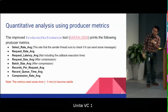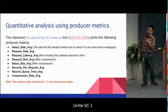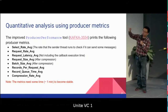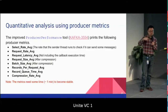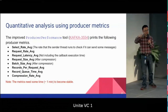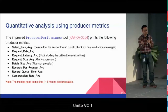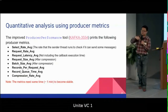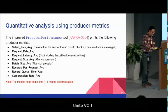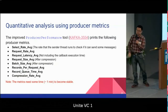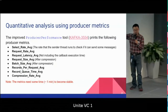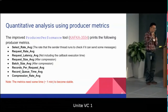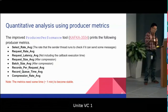The improved producer performance tool also prints out internal producer metrics to help tune performance. These metrics include select rate — the number of sender thread iterations per second. It's worth noting that these metrics take some time to stabilize, usually about one minute, so run the tool for more than one minute to get stable results.